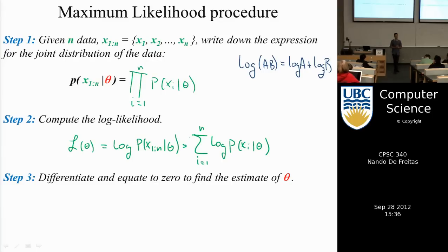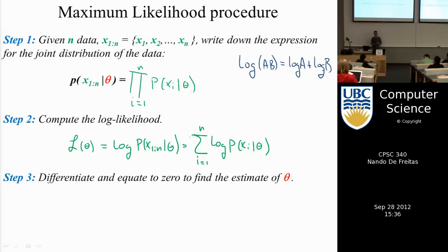Most of the things we do in machine learning follow this formula, except for Bayesian learning which is very different. We always follow this recipe — it's by far one of the most popular; I would say about 70% of all papers use this procedure. Let's see an example of this in practice.